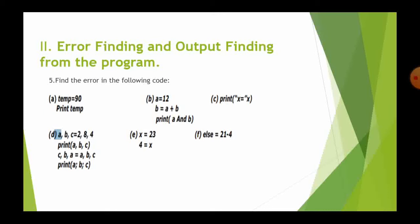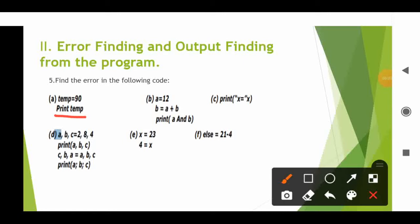Section 2, question 5: find the error in the following code. First: temp equal to 90, print temp — syntax error because the parenthesis is missing. Second: a equal to 12, b equal to a plus b — error because b is not defined; only a has been assigned. Third: print 'x:' x — invalid syntax because the comma is missing and the syntax is not used properly.